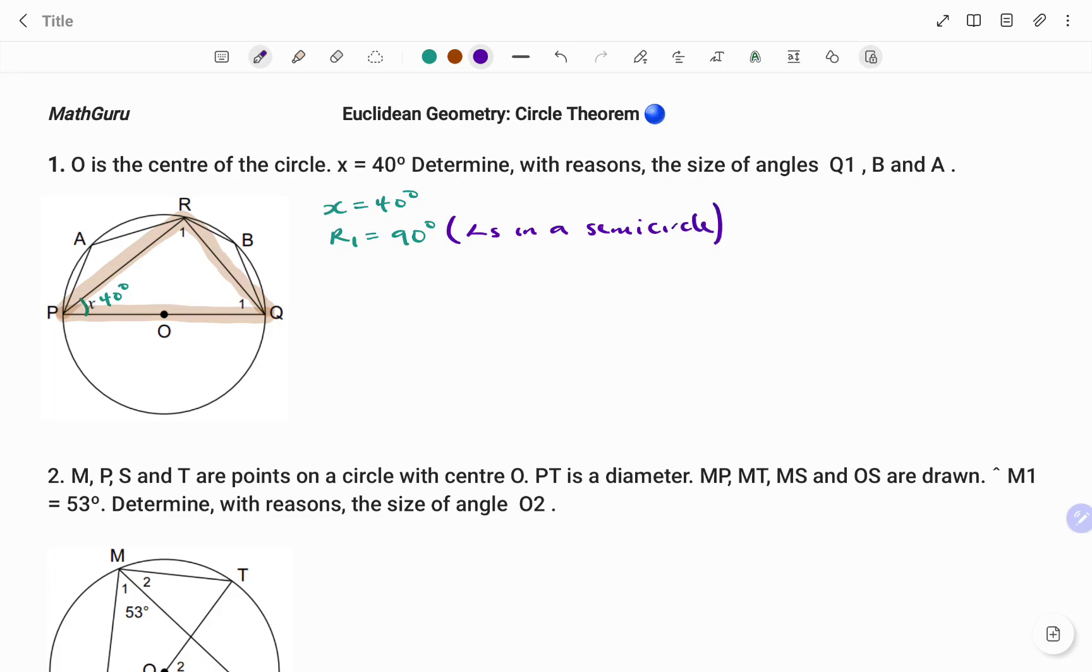So therefore, if R1 is 90 as shown, to find Q1, that's the first angle, I have Q1 plus x plus R1 equals 180 degrees. And the reason being, the sum of angles in a triangle. The triangle is PRQ or QPR. Therefore, putting in the parameters,